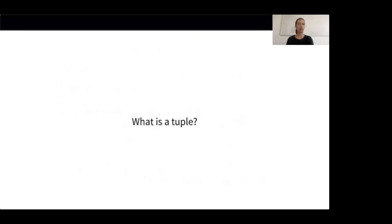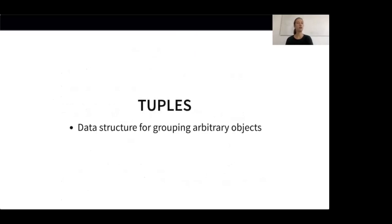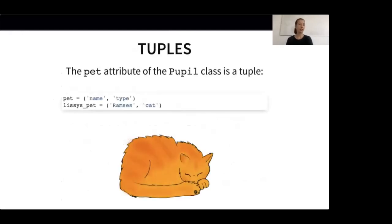Going on to the next section where we will take a look at named tuples. Before looking at named tuples, we should review what a tuple is. In Python, a tuple is a simple data structure that can be used for grouping arbitrary objects. Importantly, tuples are immutable — once a tuple has been created, it cannot be changed anymore. We already use tuples in our magical universe — for example, we defined the pet attribute of the Pupil class to be a tuple. Each tuple has two fields: the name of a pet and its type, and each field can be accessed using its integer index.